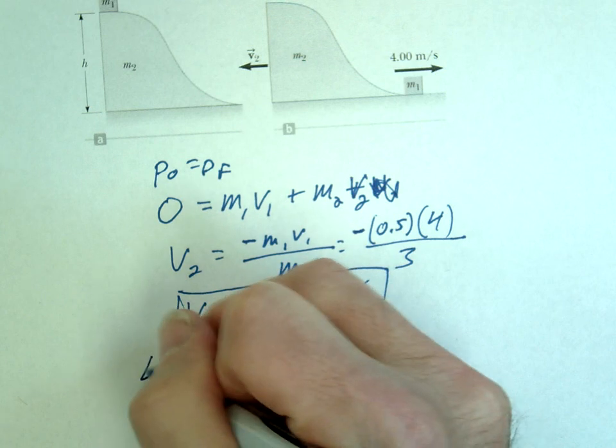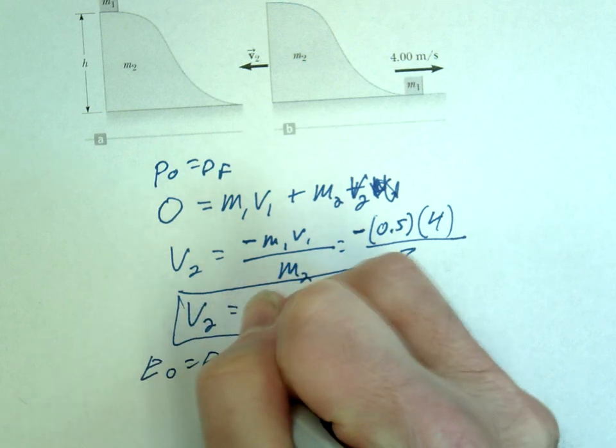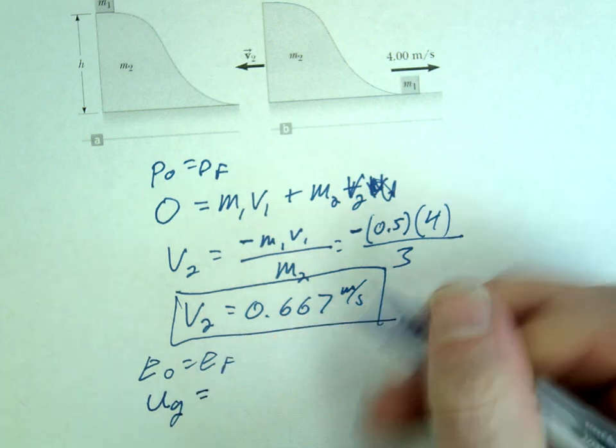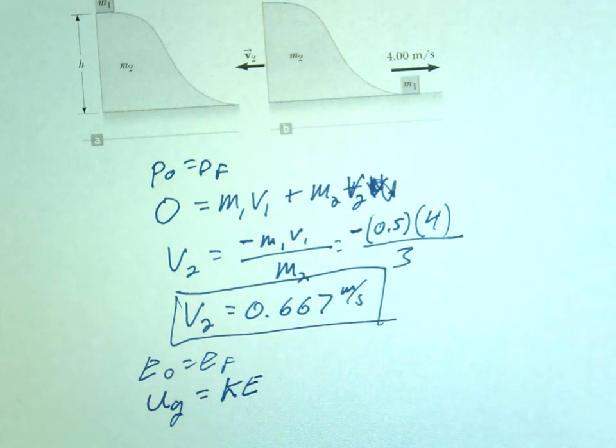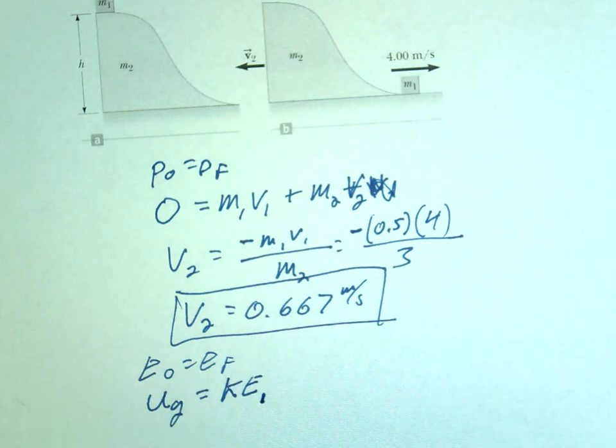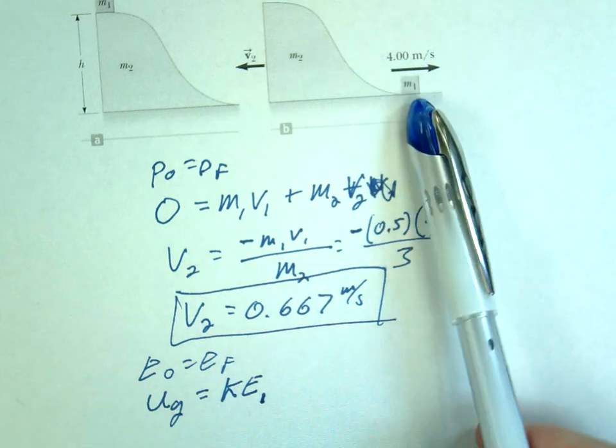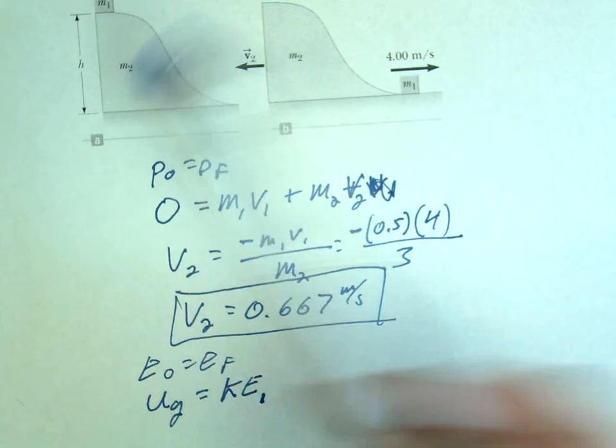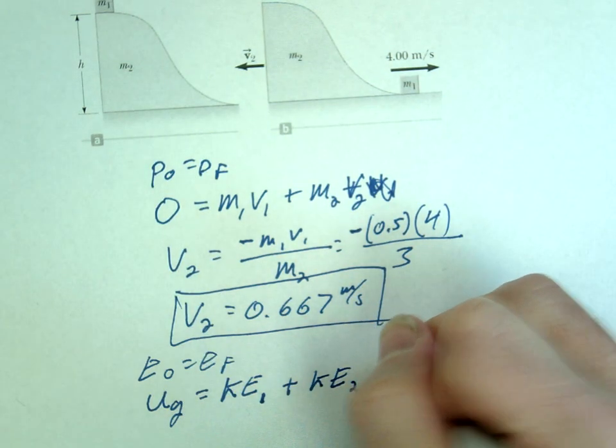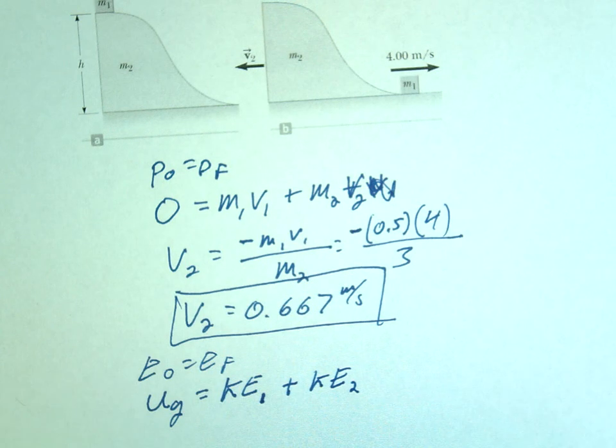So do your conservation of energy. E initial equals E final. Initial energy is UG, final energy is KE. Now here's where some people get stuck. There's two kinetic energies because there's two things moving. So we have the kinetic of the block going one way, we have the kinetic of the wedge going the opposite way. So don't forget that since two things are moving, some energy goes to one, some energy goes to the other one.